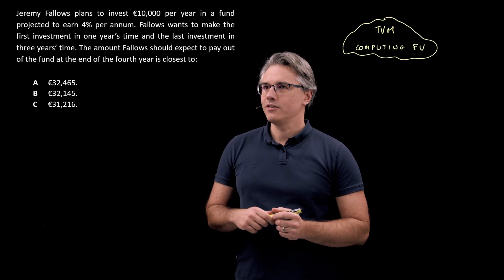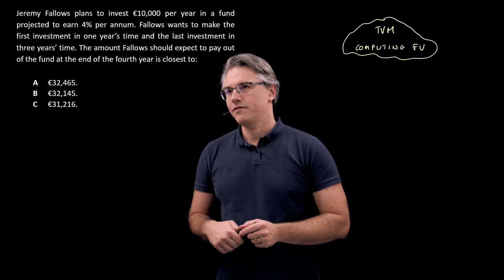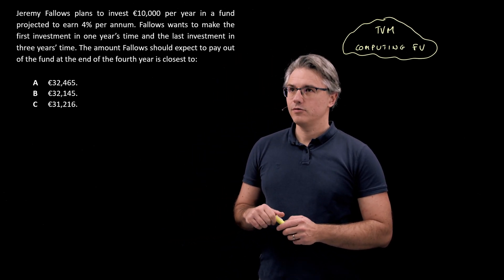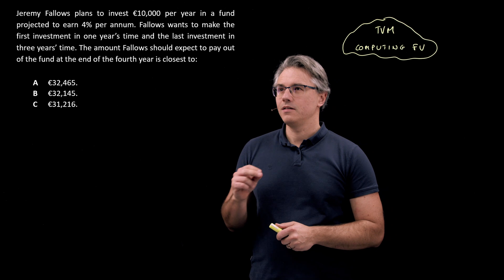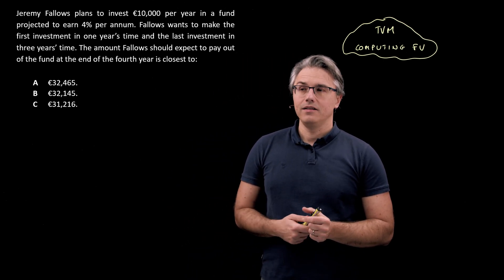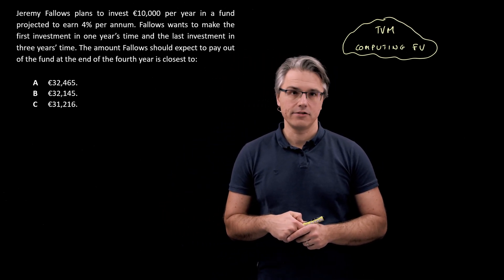So this is the question which I want us to have a go at. Jeremy Fallows plans to invest 10,000 per year in a fund projected to earn 4% per annum. Fallows wants to make the first investment in one year's time and last investment in three years time. The amount Fallows should expect to pay out of the fund at the end of the fourth year is closest to.